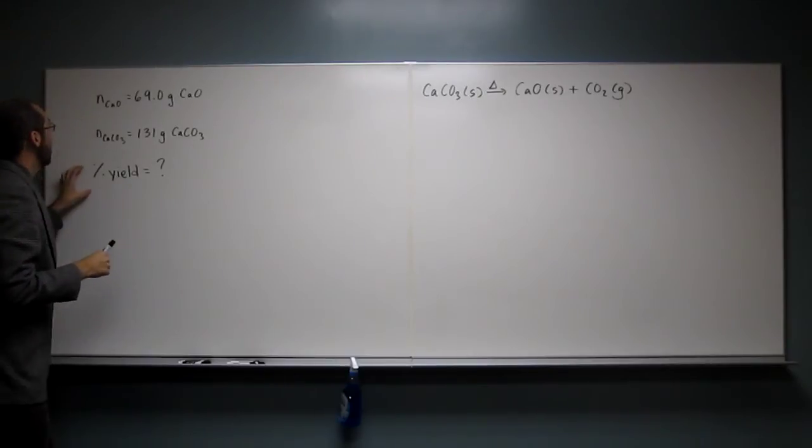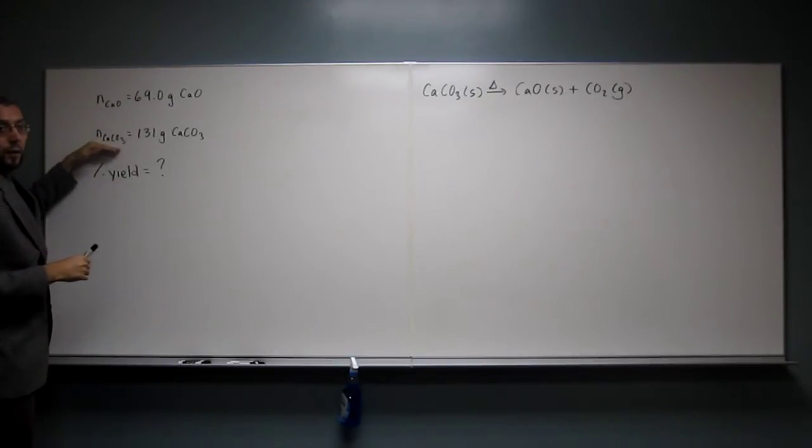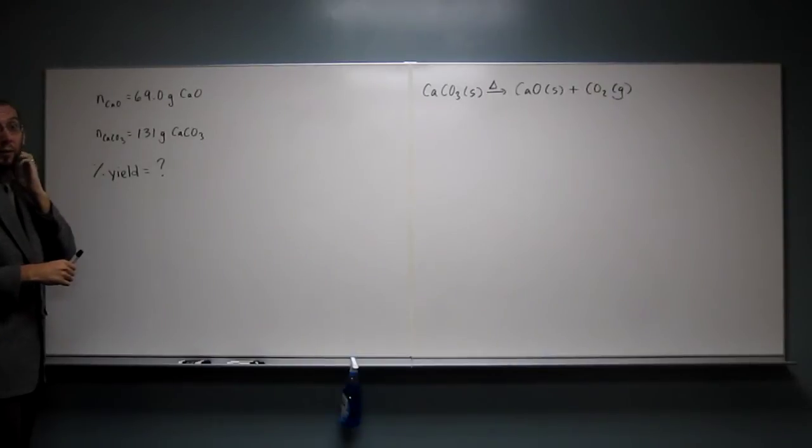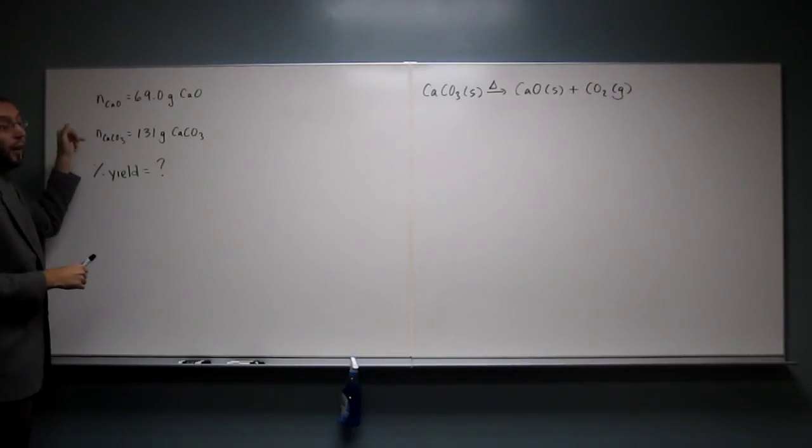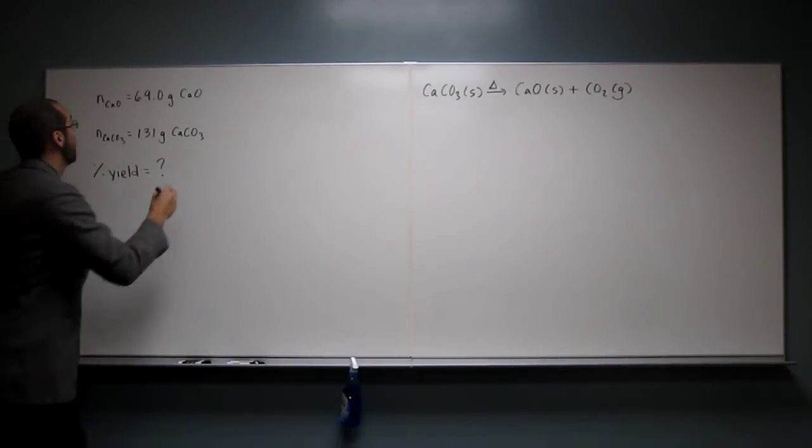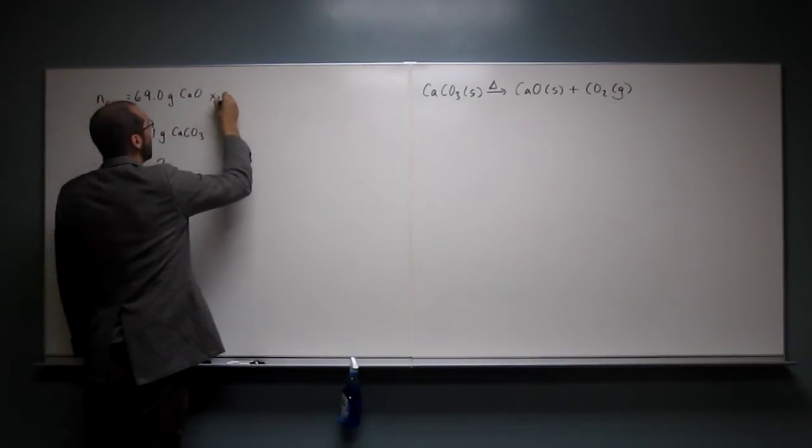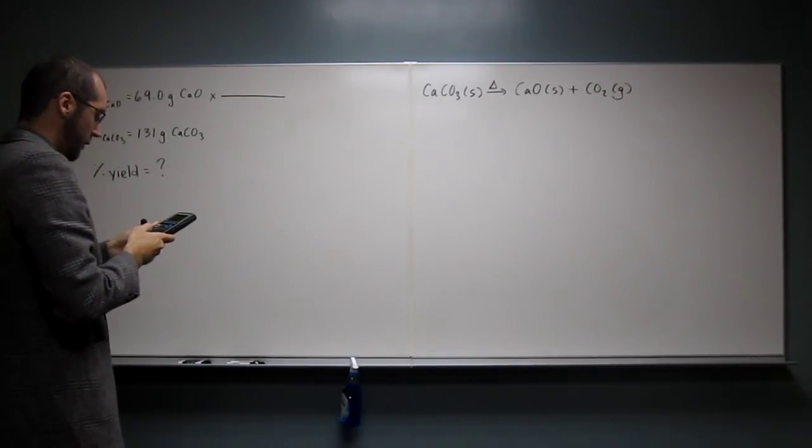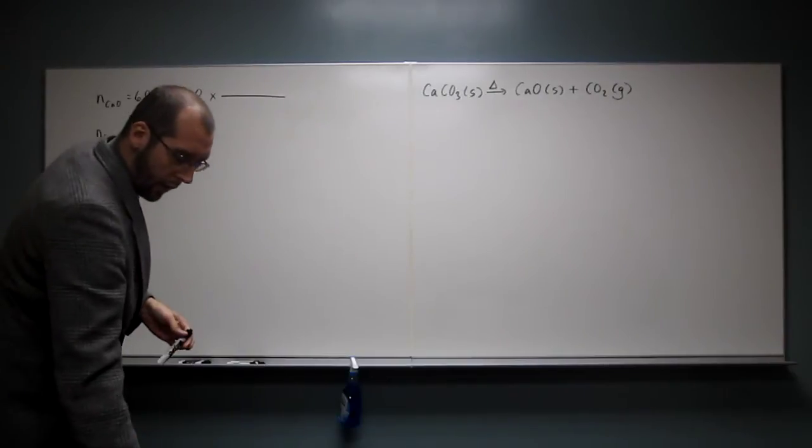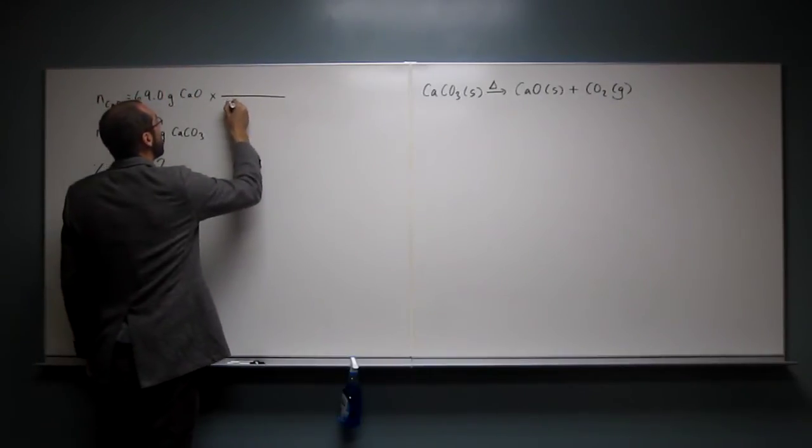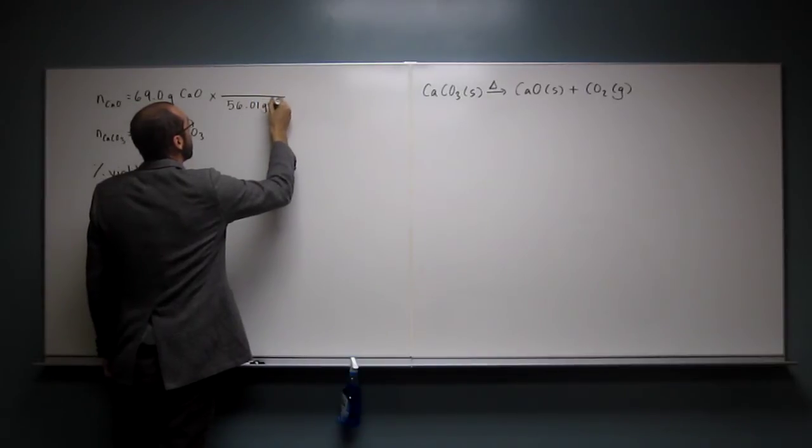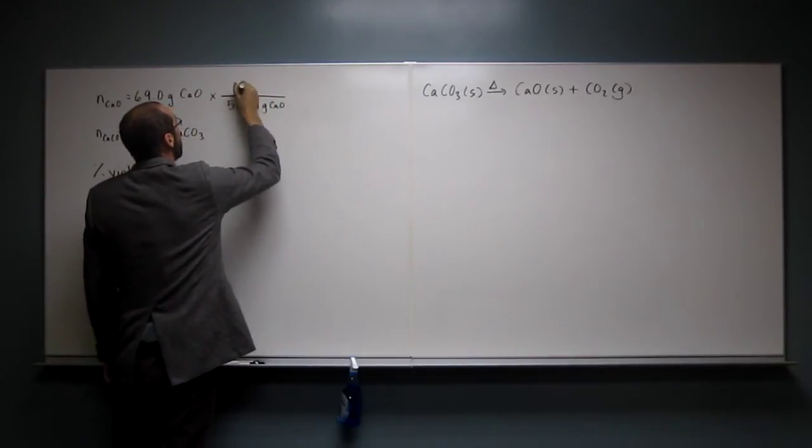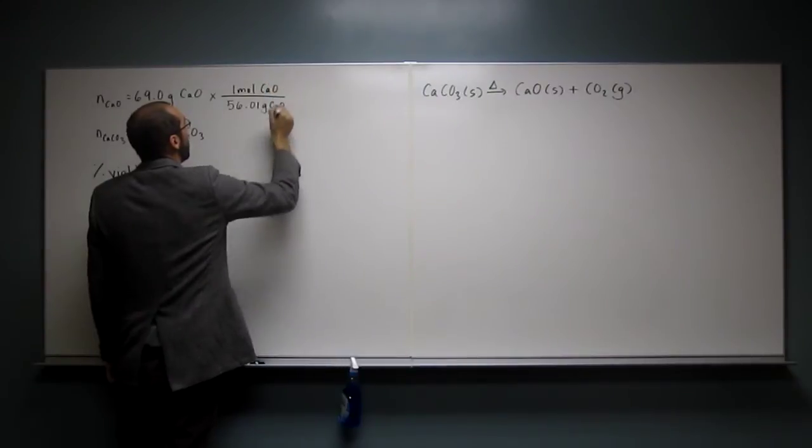It wants us to find the percent yield, but since calcium oxide and calcium carbonate weigh different amounts, their molar mass is different. We're going to have to calculate the number of moles and then compare that. So calcium is 40.01, if I remember correctly, plus oxygen, which is 16. So we've got 56.01 grams of calcium oxide is one mole of calcium oxide.